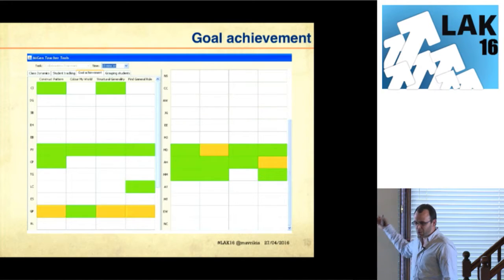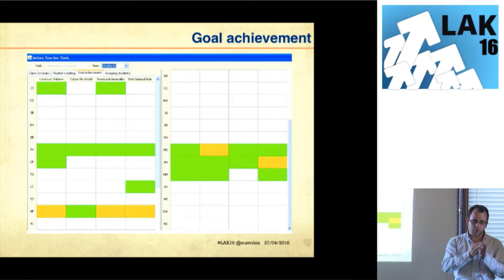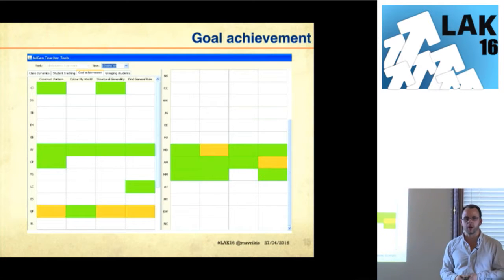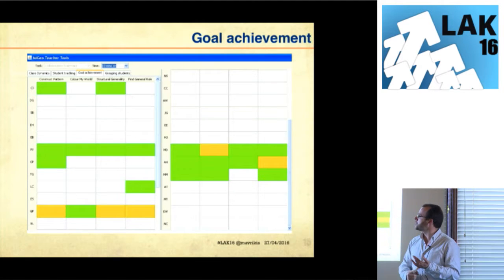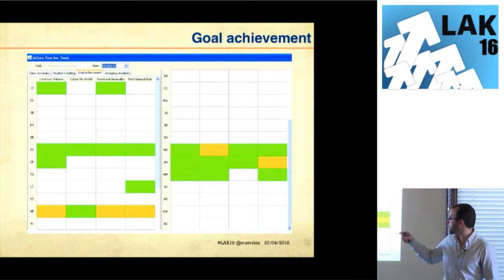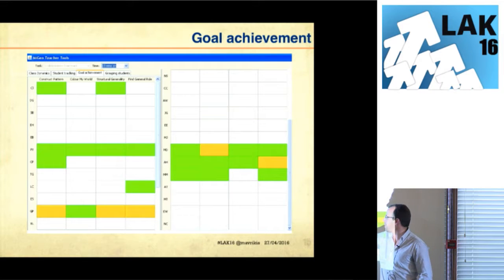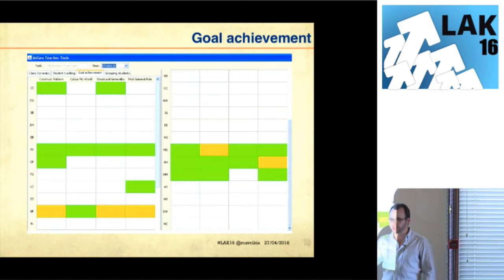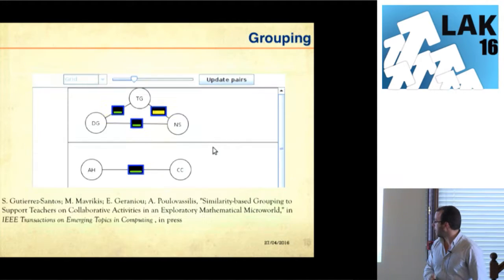As I was saying, the Goal Achievement tool shows every column as one different goal within the task. You saw the different ways that patterns have to be made — at some point students have to construct it, color it, generalize it, find the solution, and so on. This shows the progress of each student: if they haven't achieved the goal it's white; if they achieved it but maybe deleted something, it turns yellow.